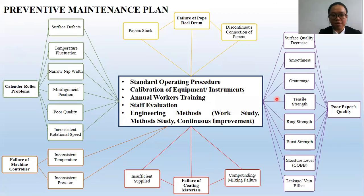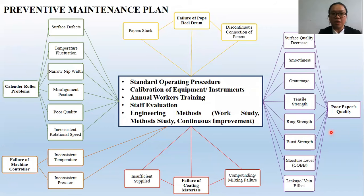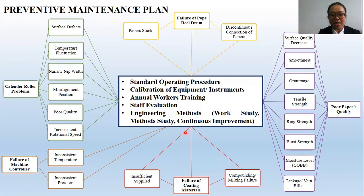This is the preventive maintenance plan that has been developed. The problems found fall into five different categories: calendar roller problems, failure of machine controller, failure of quad drill drum, failure of coating material, and poor quality of paper. The suggested preventive maintenance measures include standard operating procedure (SOP), calibration of equipment or instruments, annual workers training, staff evaluation, and engineering methods such as work study, method study, and continuous improvement.